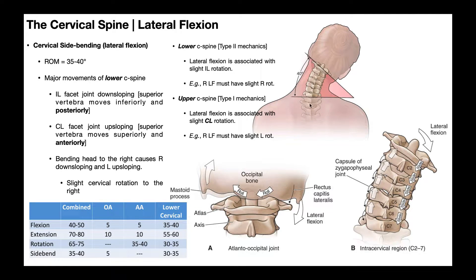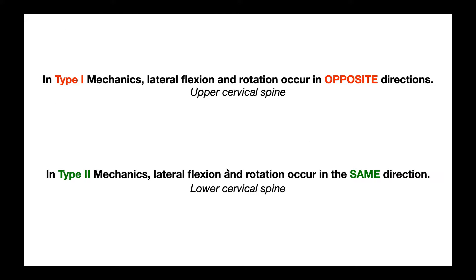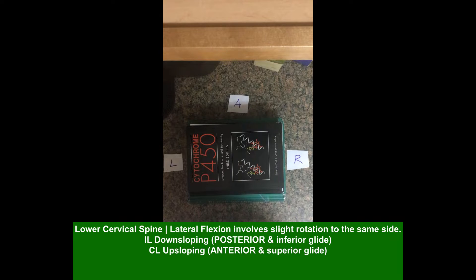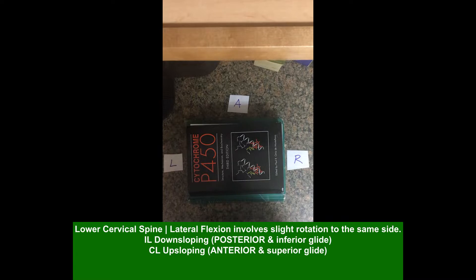If I laterally flex to the right, I get a little bit of rotation to the right. This occurs in the lower cervical spine because it follows what's called type 2 mechanics, where lateral flexion and rotation occur in the same direction. This explanation works for any region of the spine following type 2 mechanics — which is most of the spine — but not for type 1.